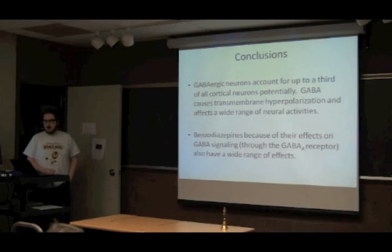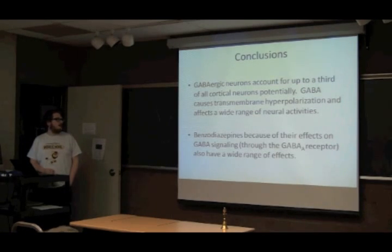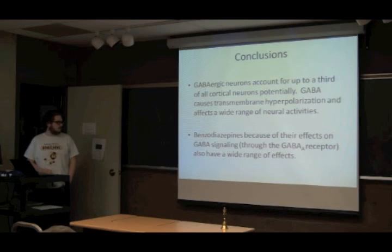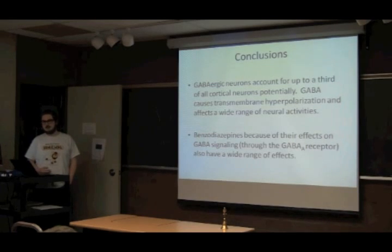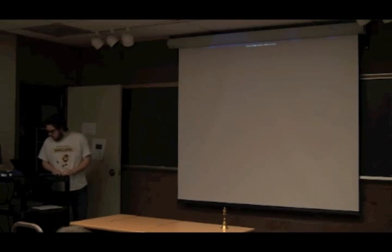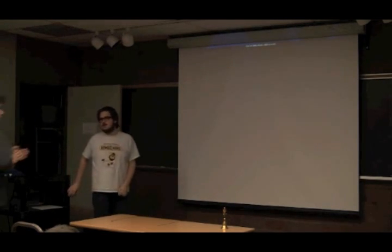To sum up: neurons that release GABA are really common in the mammalian brain. GABA causes neurons to become hyperpolarized, so they're less likely to fire. It affects a whole lot of activities, probably just because it's so common. Benzodiazepines have their effect by binding to the GABA-A receptor and making GABA signaling more effective.